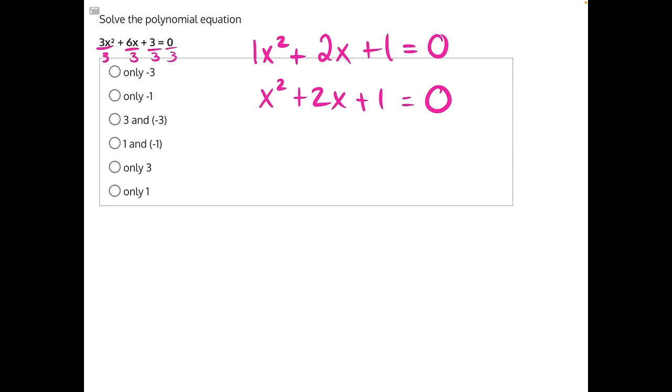We need to find two factors that could multiply together to give us 1, but add together to give us our b term of 2. So if we're looking for something to add to give us 2, and multiply to give us 1.